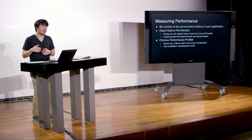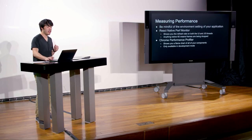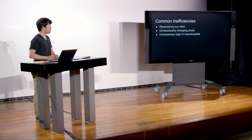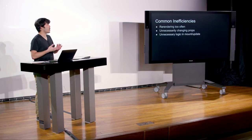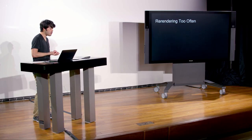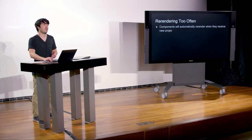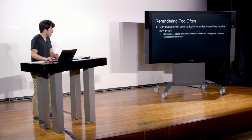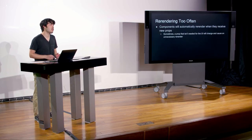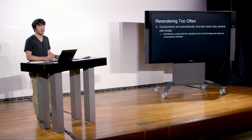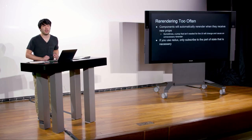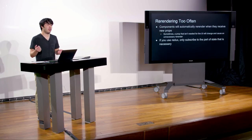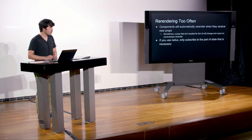Now that we've seen how to look at app performance, let's optimize some things. Common inefficiencies in React Native apps include: re-rendering too often, unnecessarily changing props, and unnecessary logic in mount/update. Re-rendering too often happens because components automatically re-render when they receive new props. Sometimes an unnecessary prop is passed, and if that changes it causes the entire component to re-render — completely unnecessarily. The fix: if using Redux, only subscribe in mapStateToProps to the parts of state you actually need.